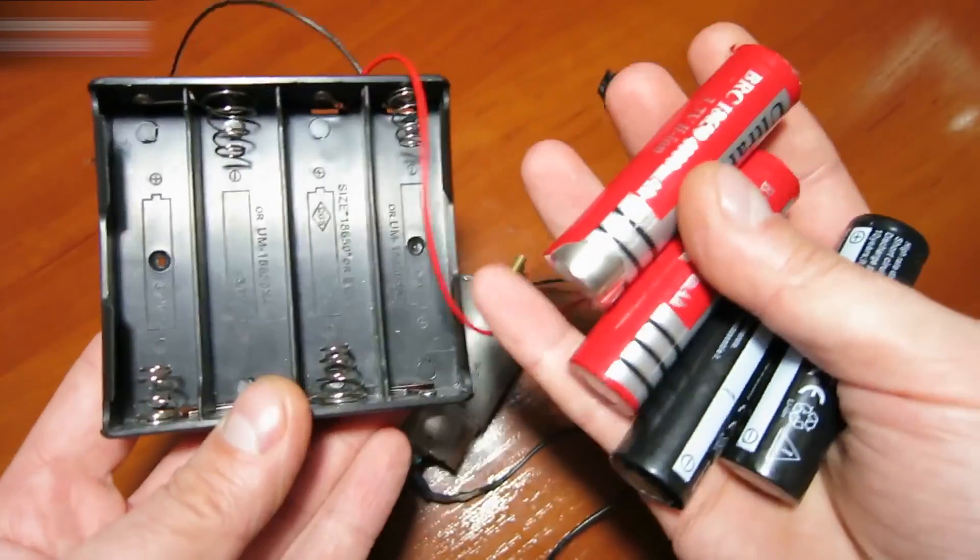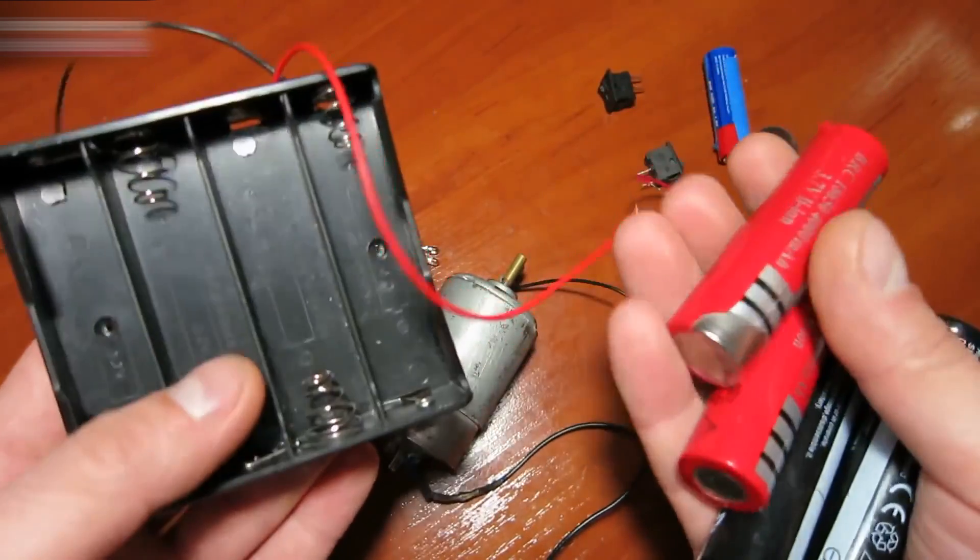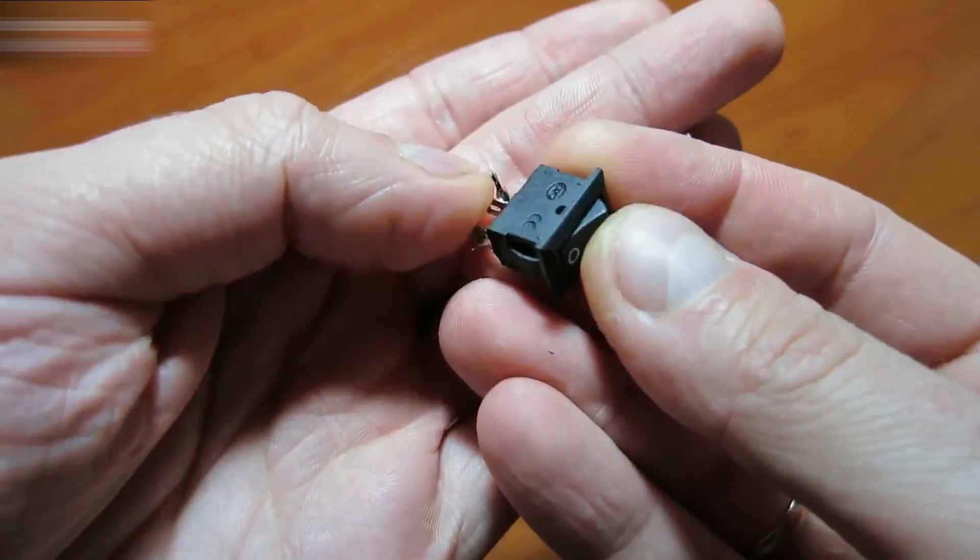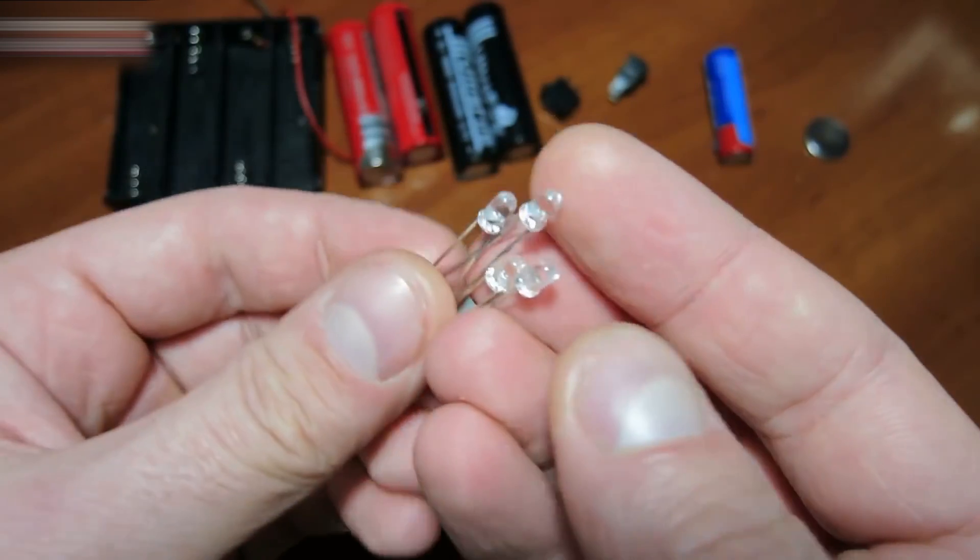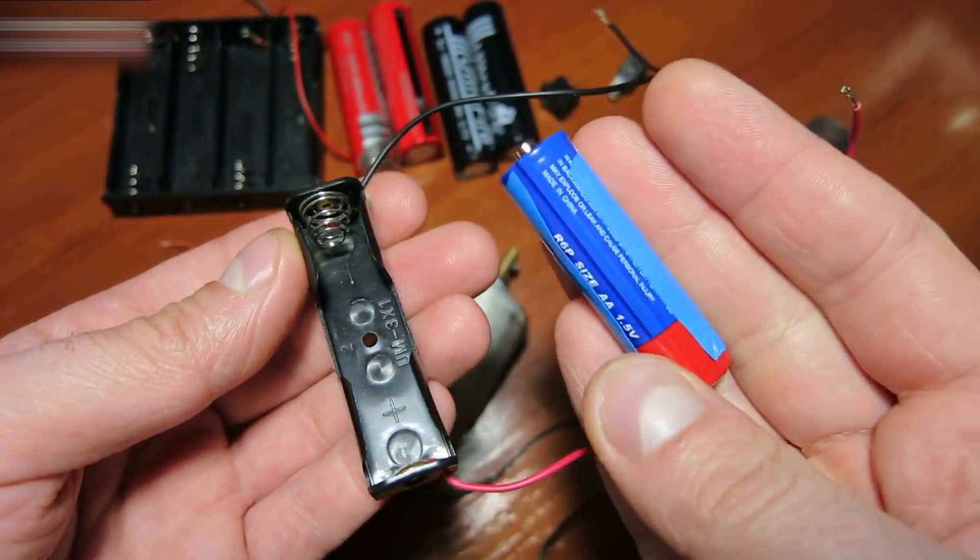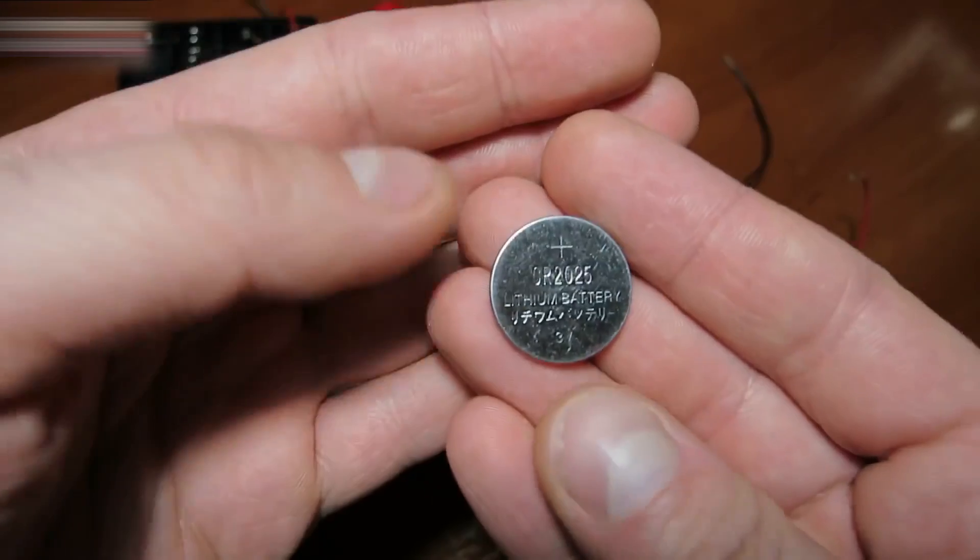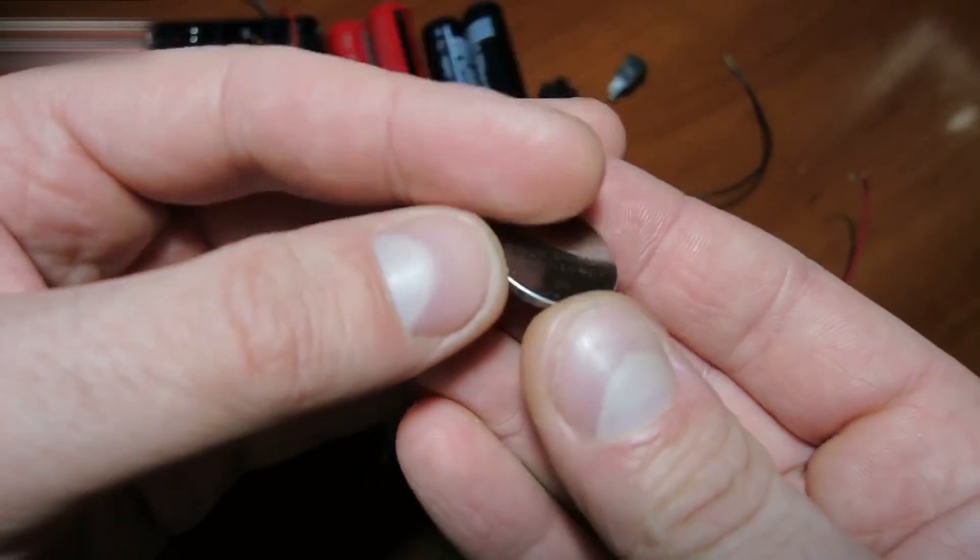You also need four 18650 batteries and a case for them. You will also need three switches, four LED lights, I'm using red lights, and a AA battery with case. You will also need a CR2025 battery.